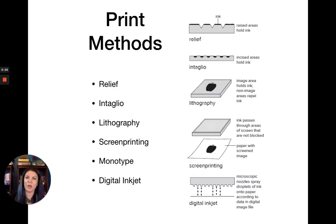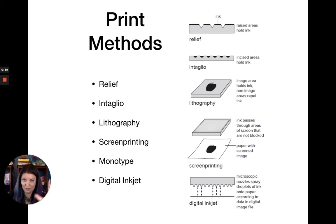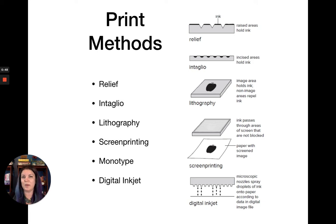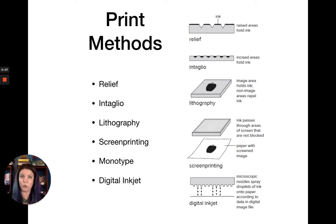There are a lot of different kinds of print methods. The general kinds are relief, intaglio, lithography, screen printing, monotype, and digital inkjet. You can see in this illustration what the differences between those are. We'll go over them all in more depth, but let's start by looking at this diagram and the subcategories within each, including the particular tools and how the process actually works.